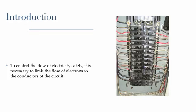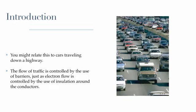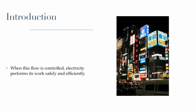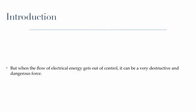To control the flow of electricity safely, it is necessary to limit the flow of electrons to the conductors of the circuit. You might relate this to cars traveling down a highway. The flow of traffic is controlled by the use of barriers, just as electron flow is controlled by the use of insulation around the conductors. When this flow is controlled, electricity performs its work safely and efficiently. But when the flow of electricity gets out of control, it can be a very destructive and dangerous force.